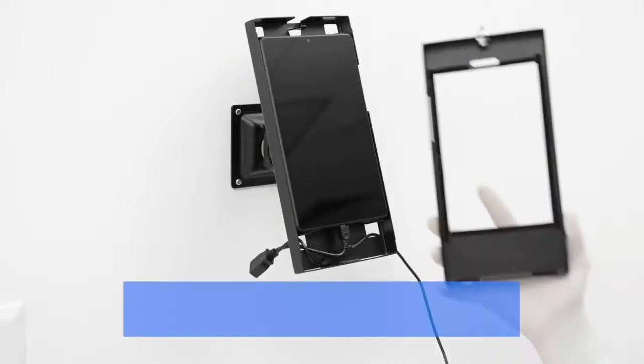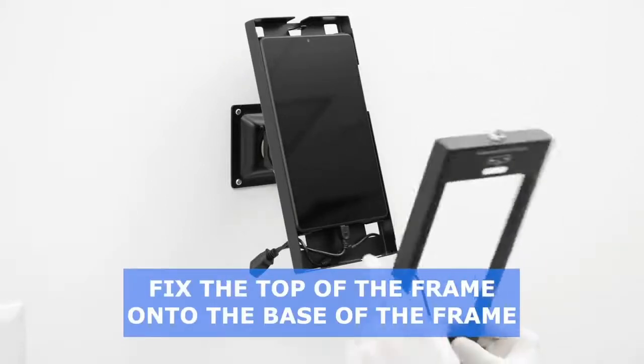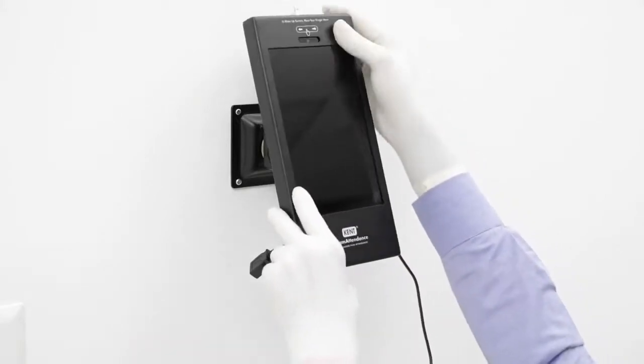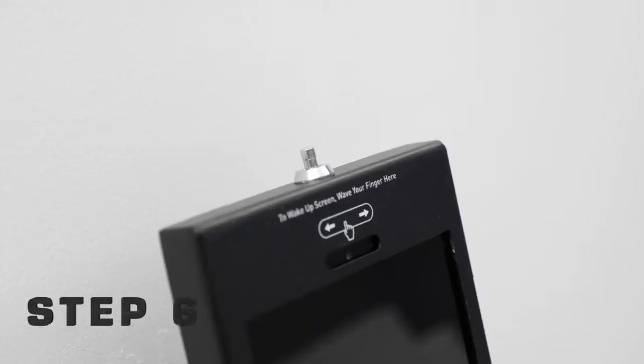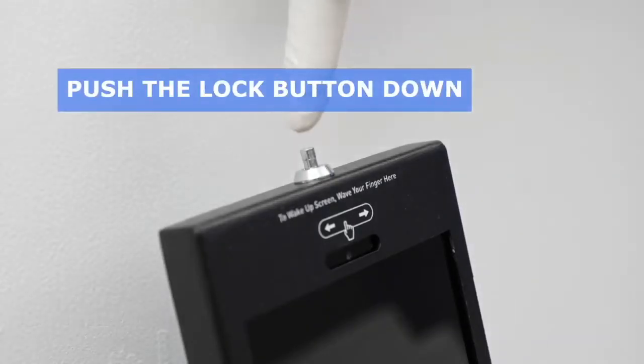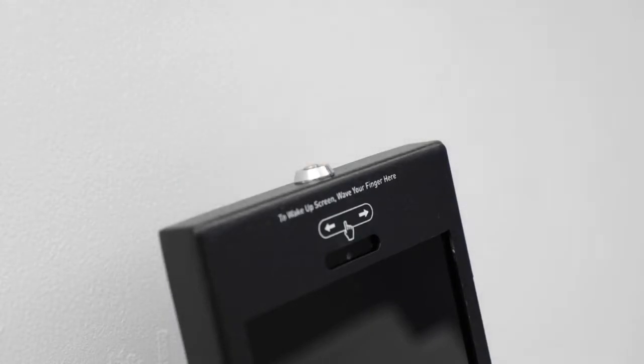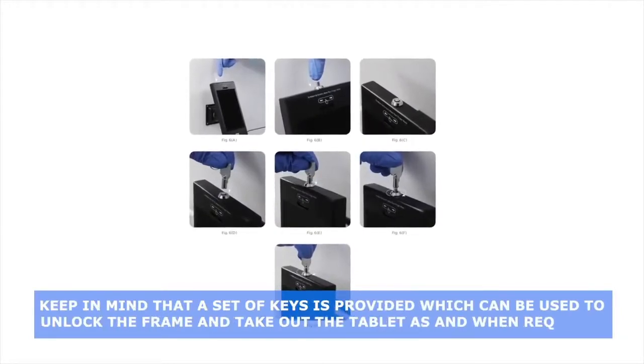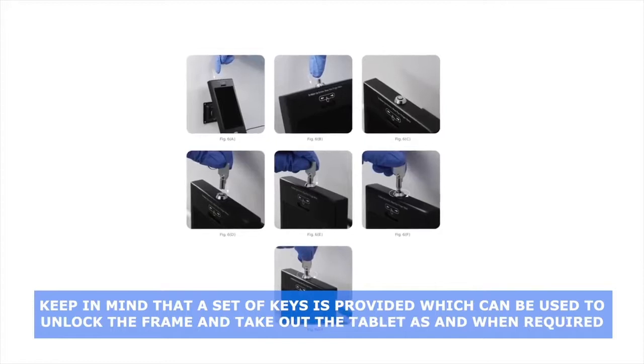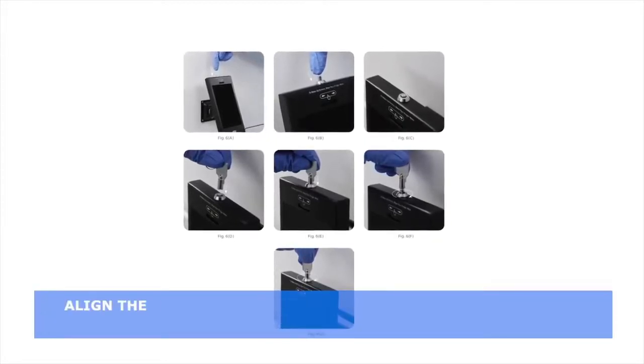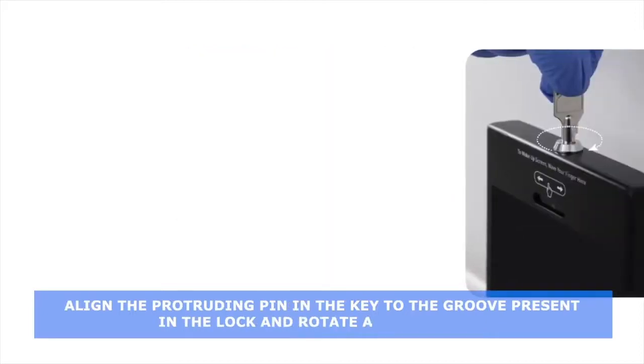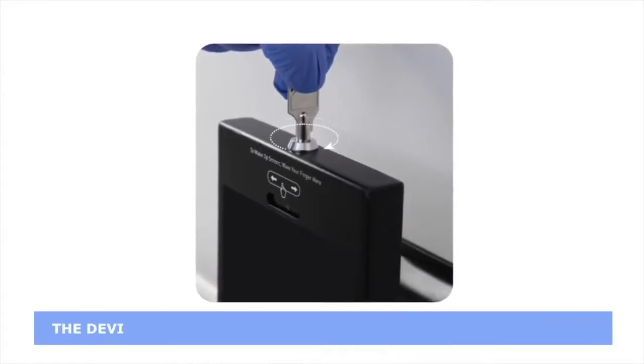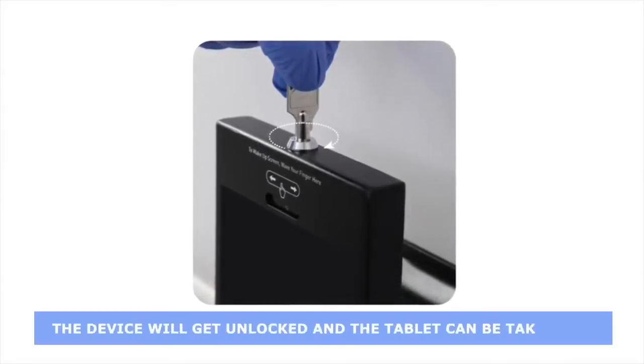Step 4: Connect the micro USB B male of the 2-in-1 micro USB Y splitter cable to the tablet and then place it in the frame's base such that the camera of the tablet is pointing towards the top direction in alignment with the lock. Step 5: Fix the top of the frame onto the base of the frame. Step 6: Push the lock button down for locking the top and the base of the frame to each other. Keep in mind that a set of keys is provided which can be used to unlock the frame and take out the tablet as and when required. Align the protruding pin in the key to the groove present in the lock and rotate 360 degrees in clockwise direction.